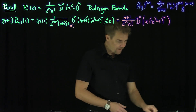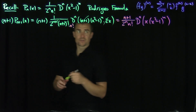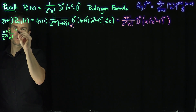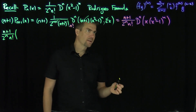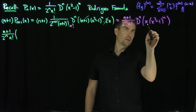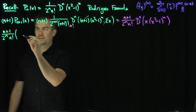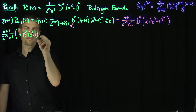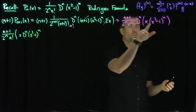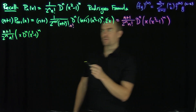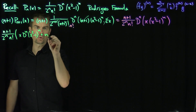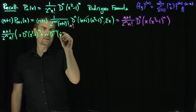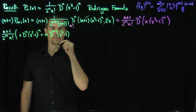Applying Leibniz to our problem, we get (n+1) over 2 to the n, n factorial, times: first, x times all n derivatives on x squared minus 1 to the n; plus n choose 1 times the one derivative of x — which is just 1 — times the (n−1) derivatives of x squared minus 1 to the n.